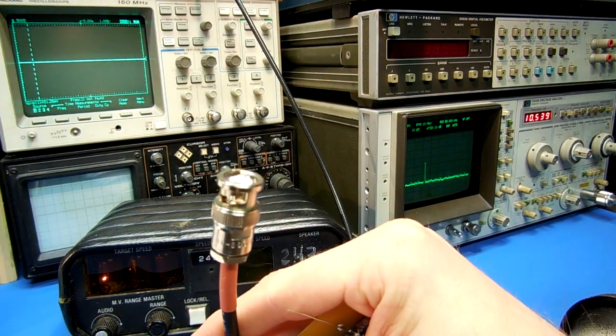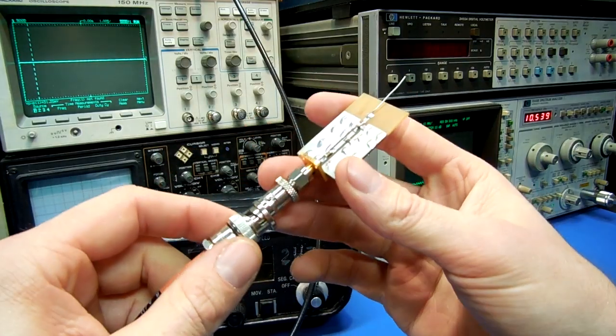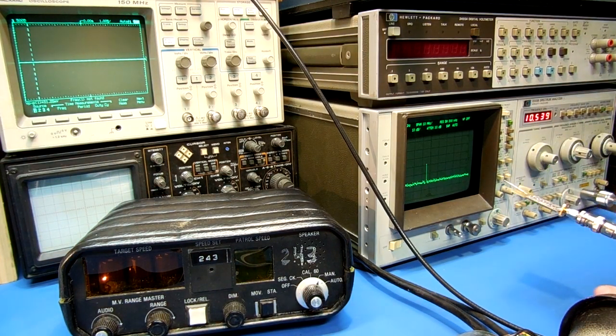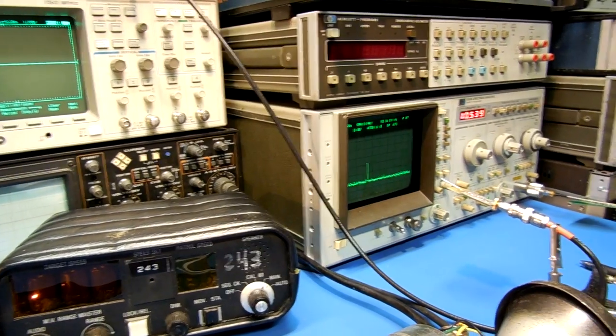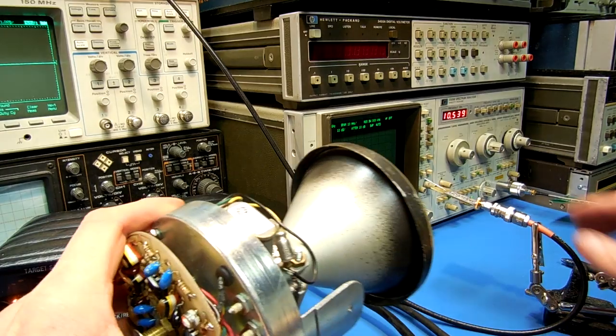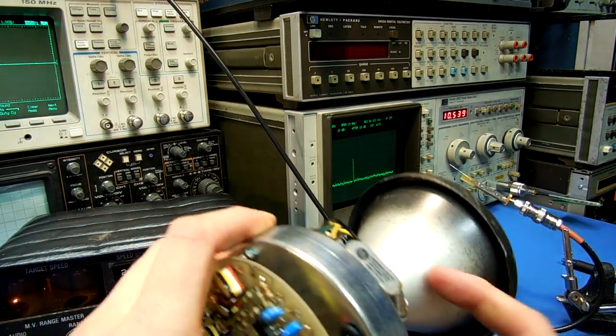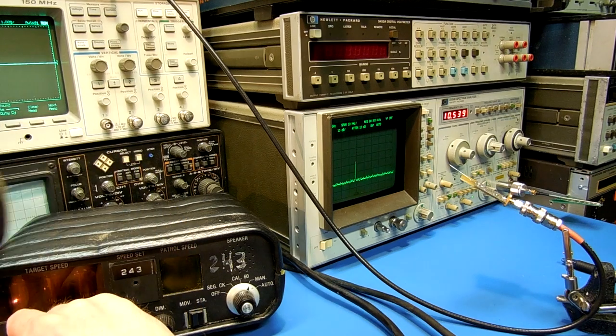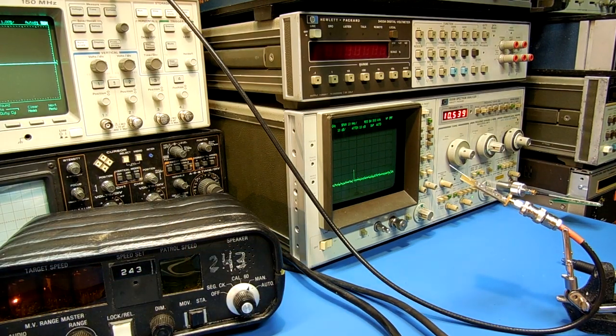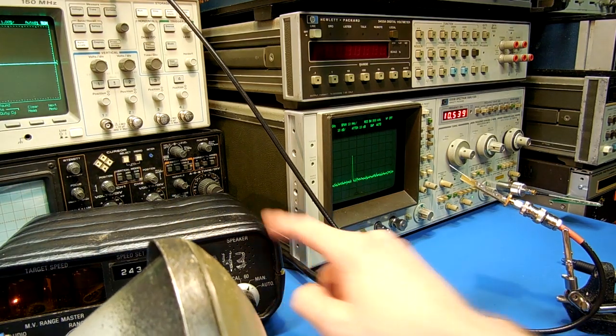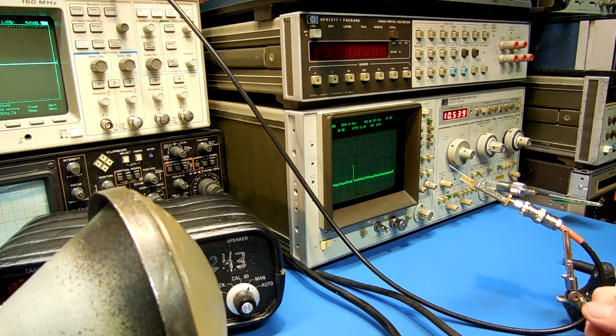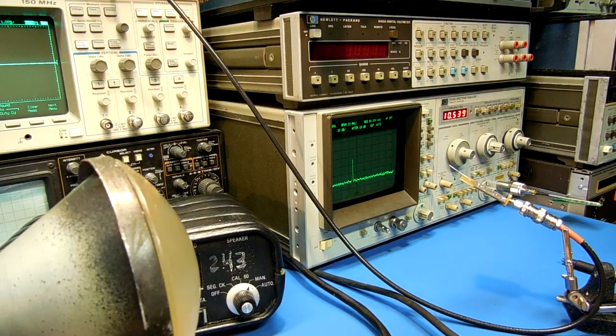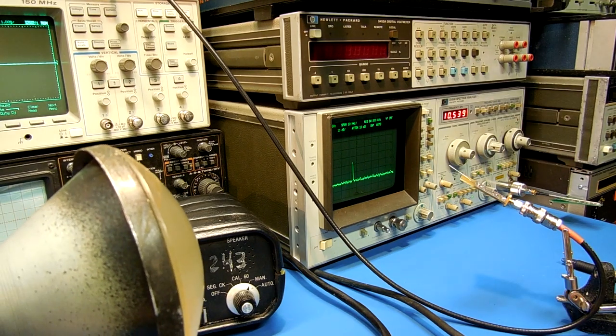This is the output of the signal generator with the one kilohertz square wave. This is going into our FET modulator. This is what you're hearing. Turn it away. On the radar unit, you're hearing the one kilohertz tone being amplitude modulated. The backscatter is coming back into the radar unit, and we're hearing it on the speaker inside the radar.